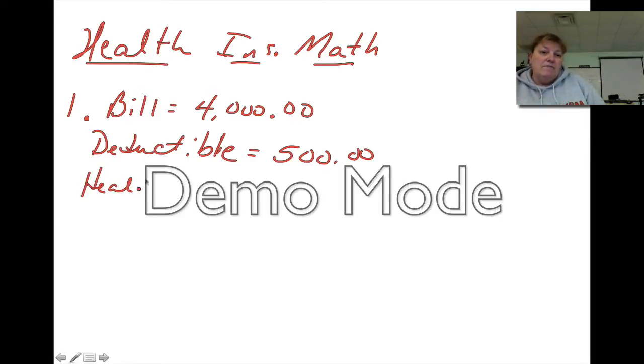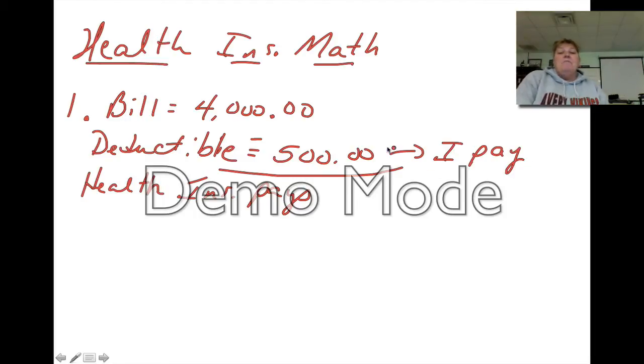So how much does the health insurance company pay? Well, it's very simple. Subtract these two. I pay this, and once I pay my $500, now just subtract, so my insurance company pays $3,500. So the bill was $4,000, I paid out-of-pocket $500, and then health insurance pays $3,500. That's how you do number one.